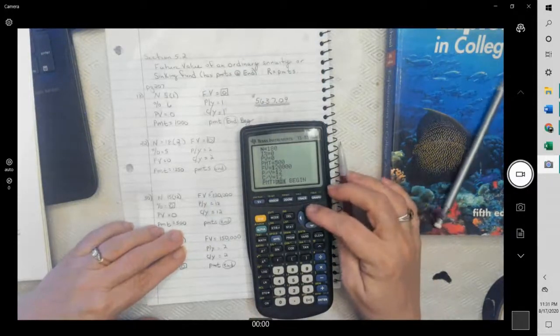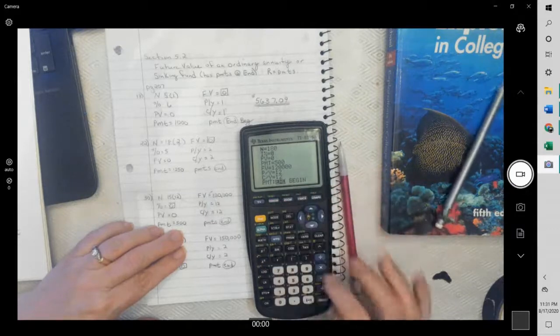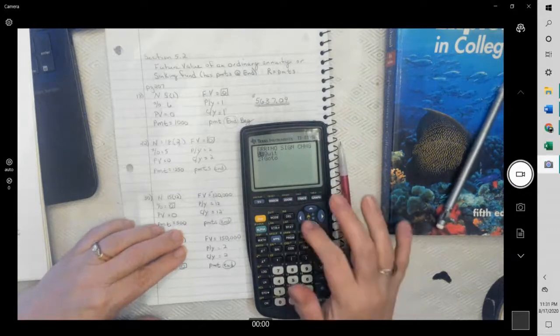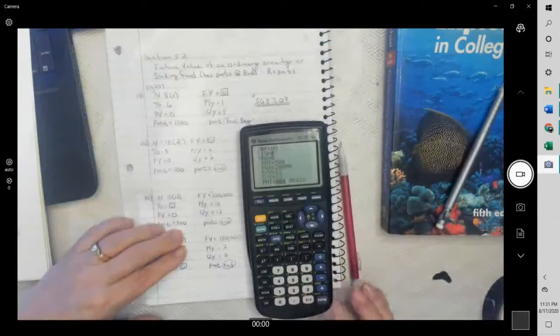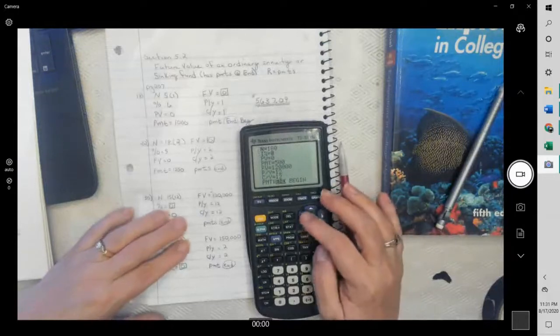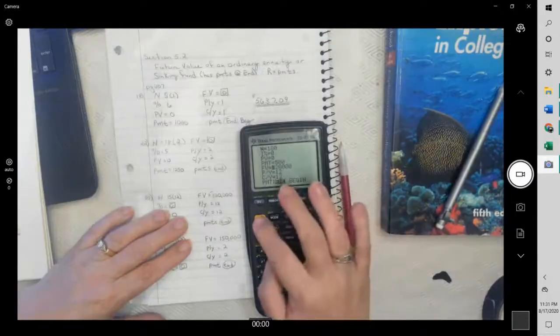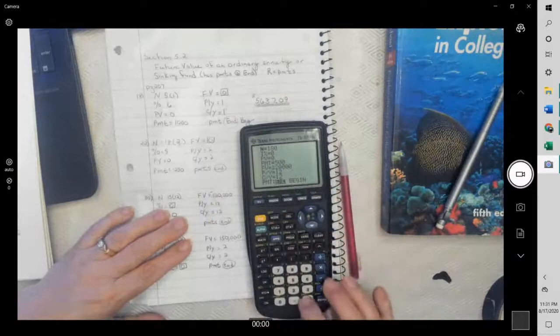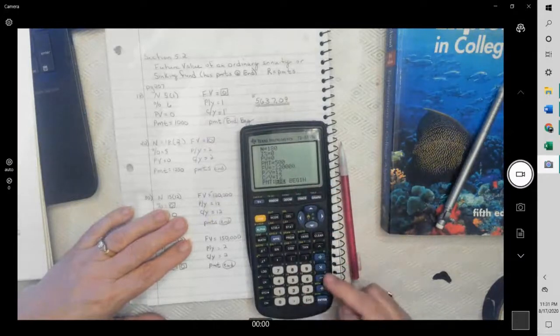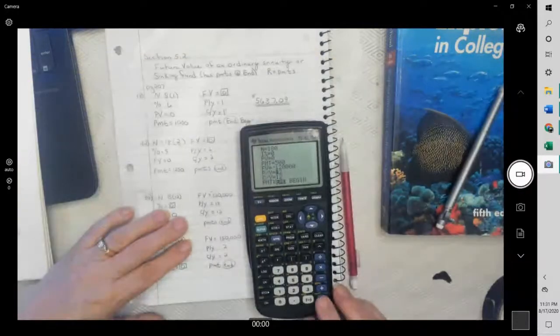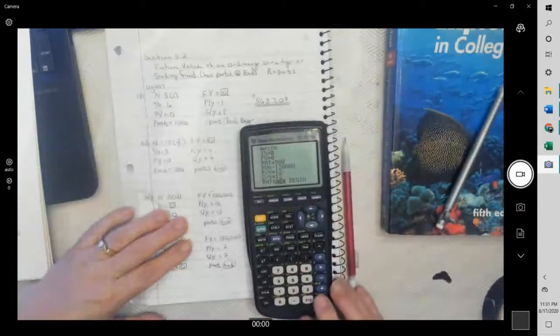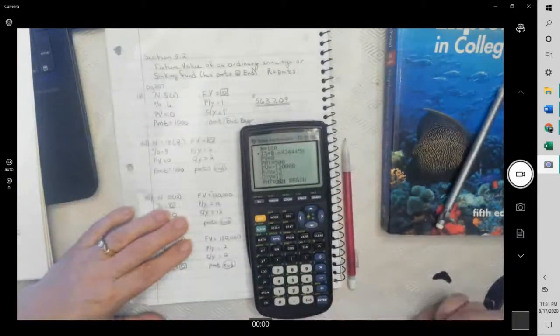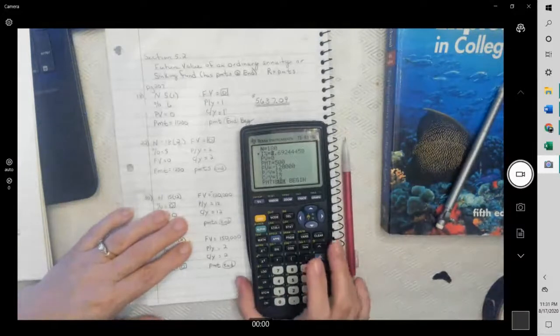We were looking for the percent. Alpha, enter. Notice that I forgot to make one of them negative because I was typing too quick. Make sure you use the negative and not the minus sign. And then go back up also. We get 3.69%.